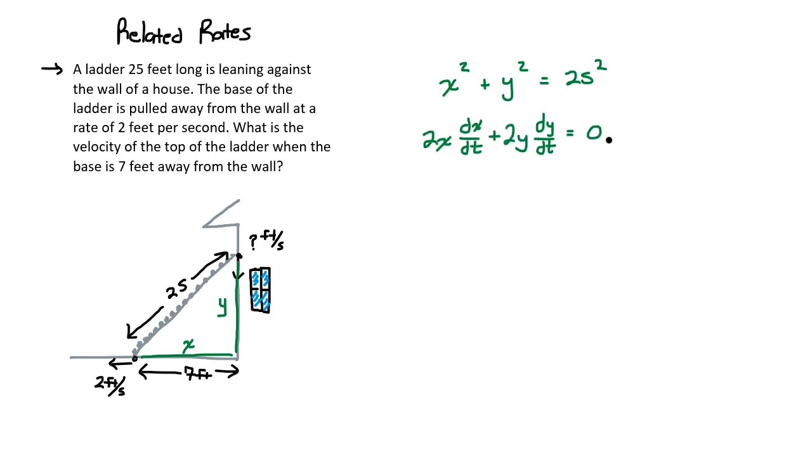So why would it be helpful to have this written out? Because we know the value of x. We were told about a situation where it was 7 feet. We know that the point on this part of the ladder is moving at 2 feet per second. That, by extension, means that this side of the triangle is expanding by 2 feet per second. So the rate of change in x with respect to time is then 2.